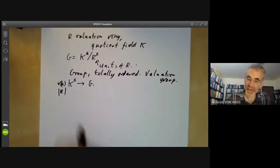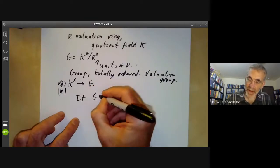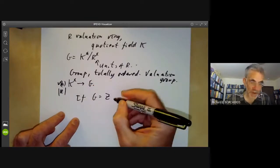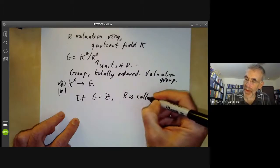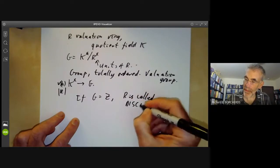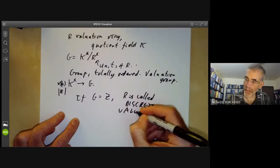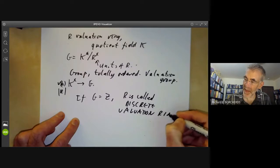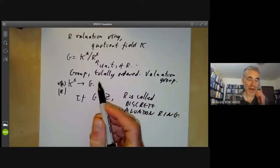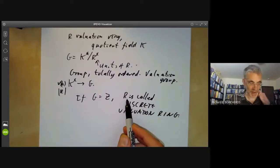If G equals Z, then R is called a discrete valuation ring.